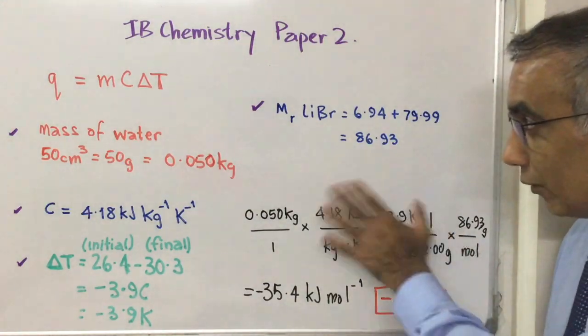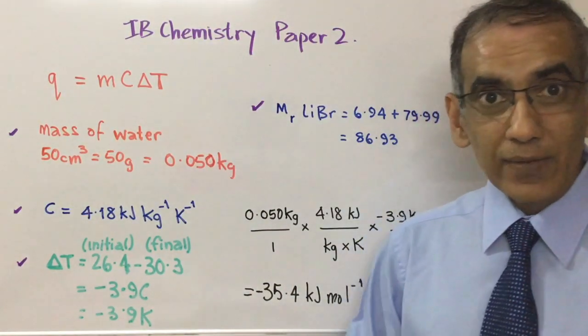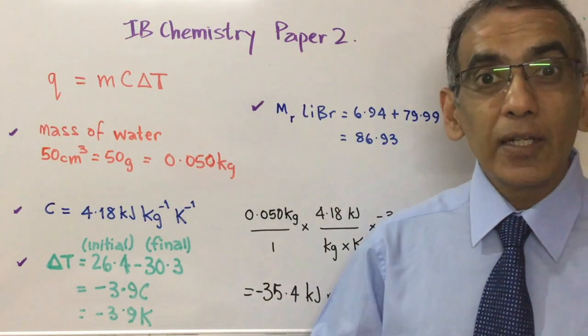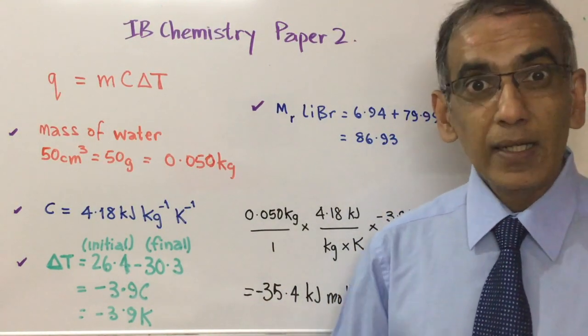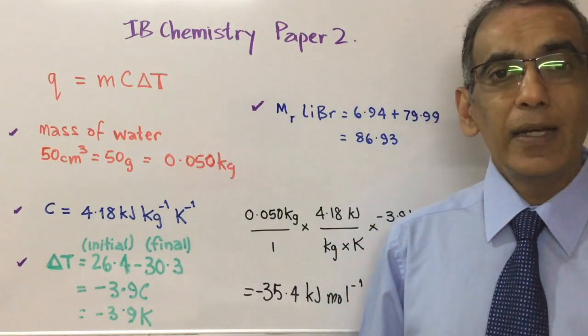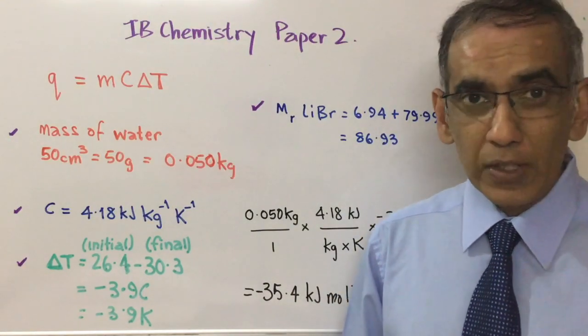Here in red I have the actual data booklet value, the theoretical value for this. Of course, you have to bear in mind that this is a coffee cup calorimeter experiment and there's significant heat losses and approximations happening. Chemistry is more than just mathematics.